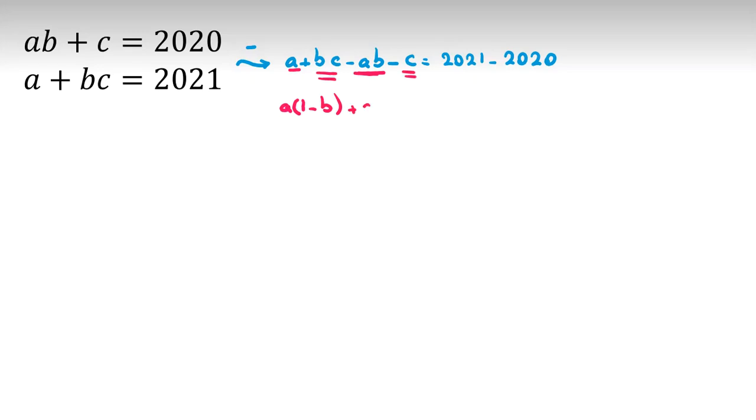It will be (b - 1). So here I factor from (b - 1): it will be (b - 1)(c - a) = 1. Because a, b, c are integers, it will be 1·1 or (-1)·(-1). Let's consider these two cases.